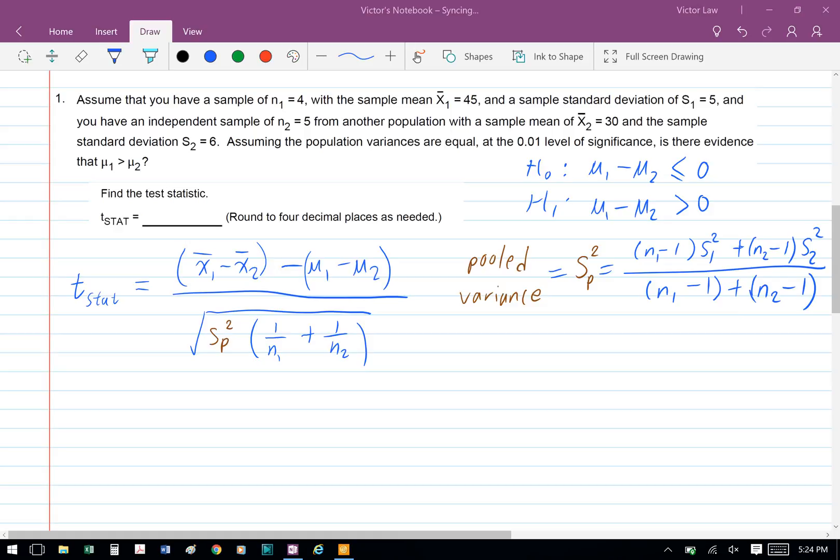In order to find the T statistic, we need to first find the pooled variance. And the formula for pooled variance is bracket n1 minus 1 bracket s1 squared plus bracket n2 minus 1 bracket s2 squared divided by bracket n1 minus 1 bracket plus bracket n2 minus 1 bracket. Next, we can plug in the numbers to solve for sp2. So we have 75 plus 144 divided by 7, so sp2 equals 31.2857.